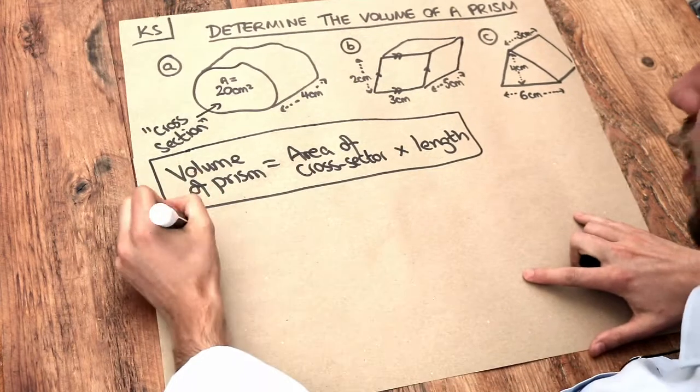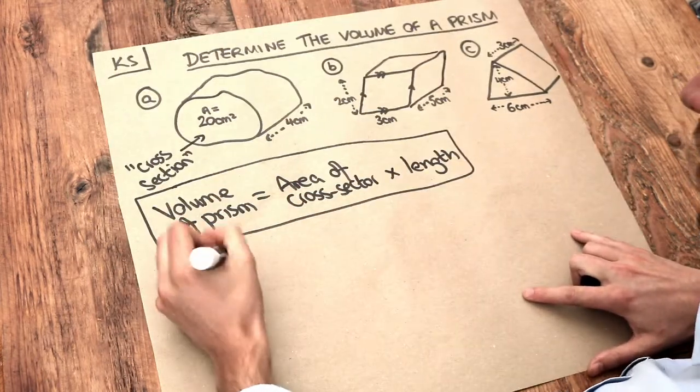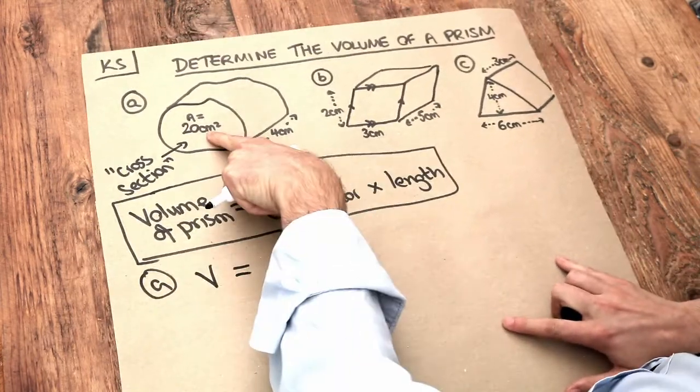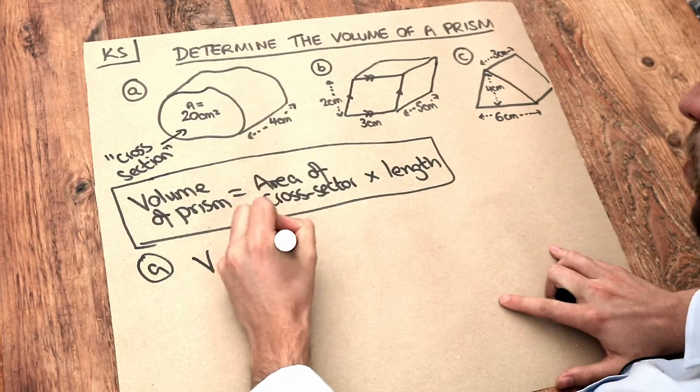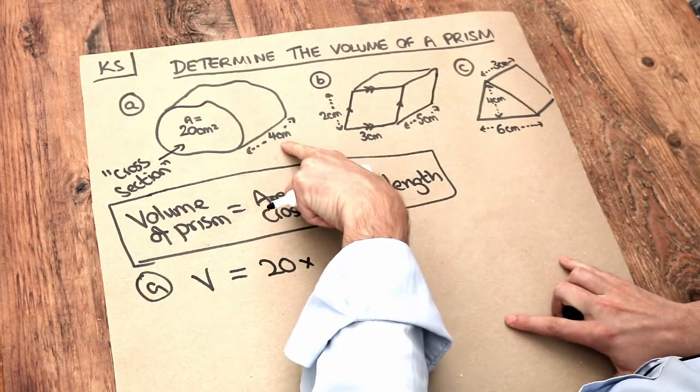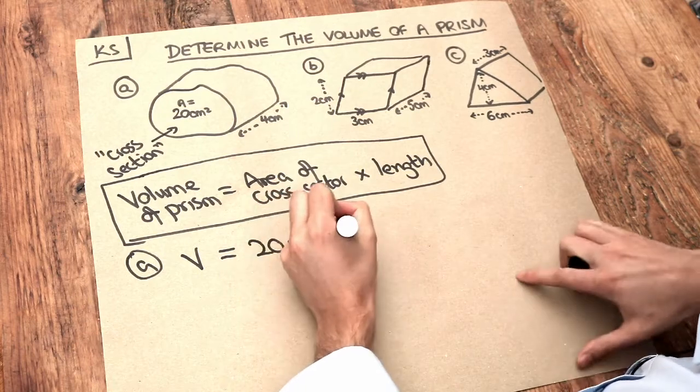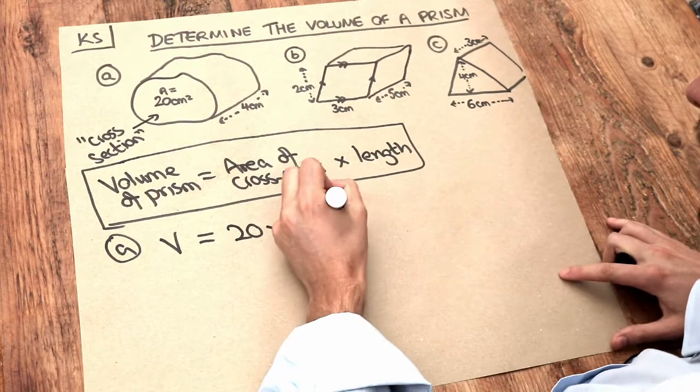For this first example we just need to simply do the area of that cross section which is 20, multiplied by the length of that prism and 20 times 4 is 80.